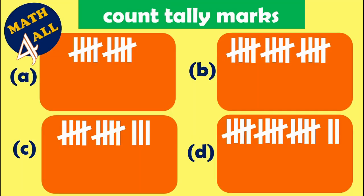Let's practice more. Example A: how many tally marks? We have a set of five plus another set of five — five plus five equals ten tally marks. Example B: here we have three sets of five — five plus five plus five equals fifteen tally marks.